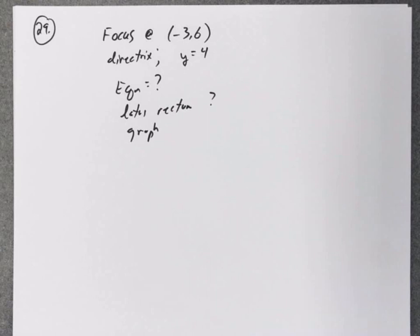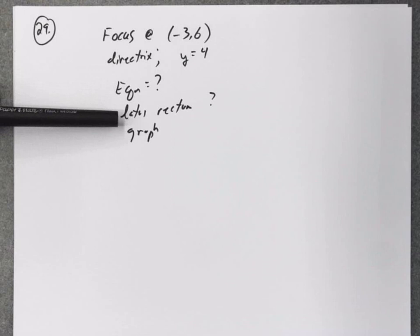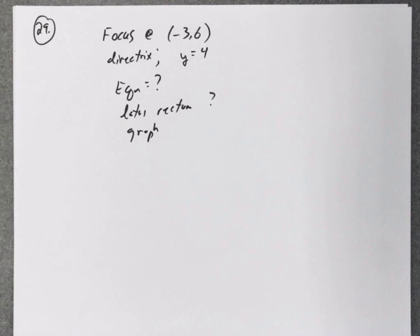We're going to look at three problems dealing with parabolas. This first problem I've written down, they've given us information about a parabola and they want to know what the equation of the parabola is and what the points are for the latus rectum and then to graph the parabola.